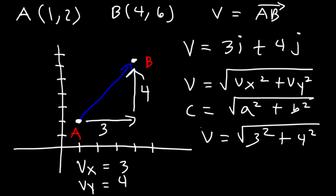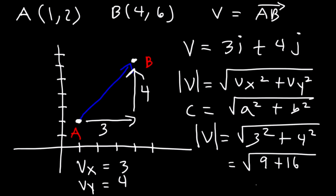When you see this inside an absolute value symbol, it represents the magnitude of V. So vector V is the square root of 3 squared plus 4 squared. 3 squared is 9, 4 squared is 16. 9 plus 16 is 25, and the square root of 25 is 5. So the magnitude of vector V is 5 — this line is basically 5 units long.